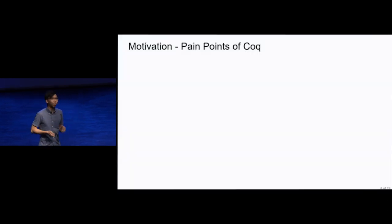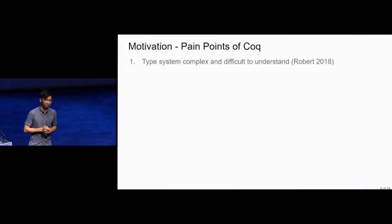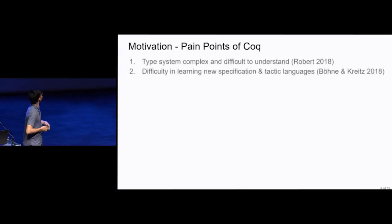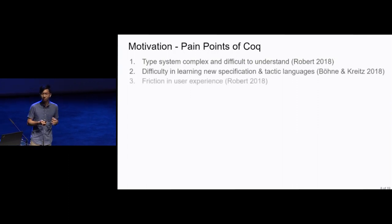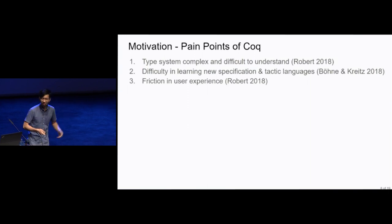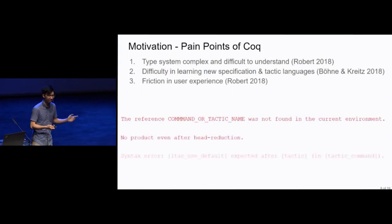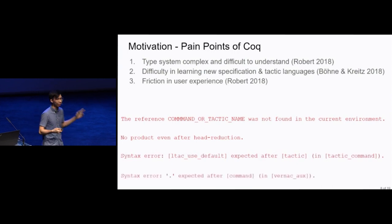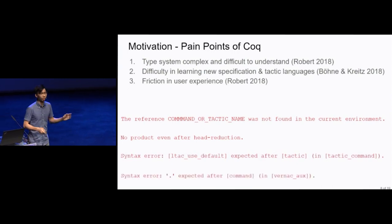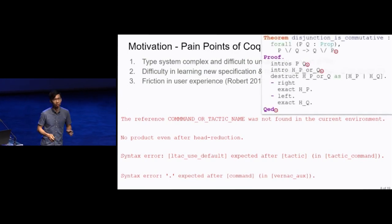We've identified a few pain points of the Coq Proof Assistant. Firstly, the type system is complex and difficult to understand. Secondly, there's difficulty in learning new specification and tactic languages. Thirdly, there's friction in user experience. This friction is best illustrated via syntax errors. Can you guess what caused this syntax error? What about this, or this? Maybe this will give you a better clue. Actually, all four of these syntax errors are caused by the same problem, which is missing the period at the end of a command or tactic.